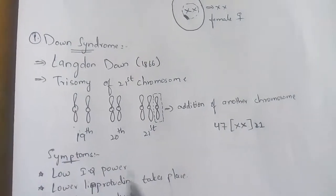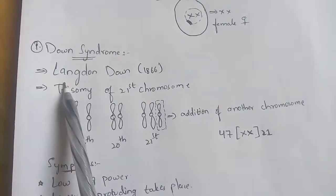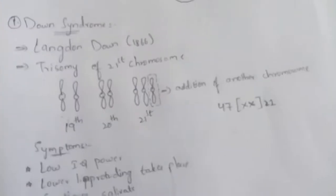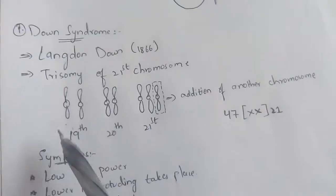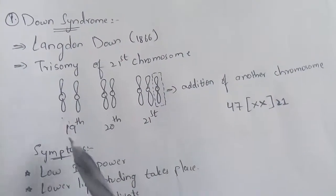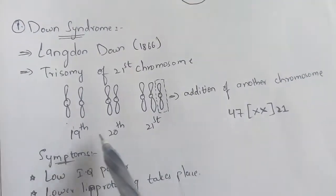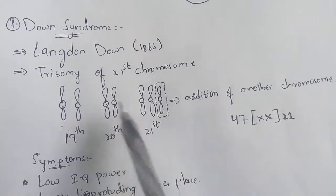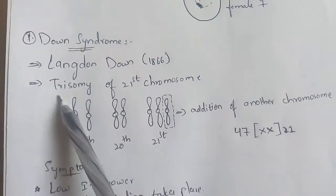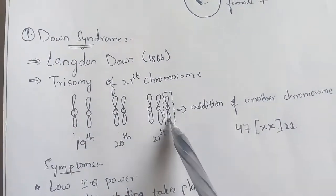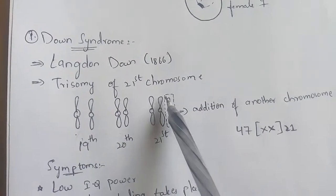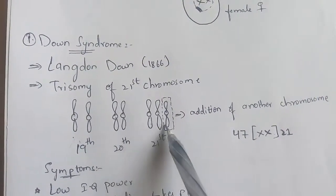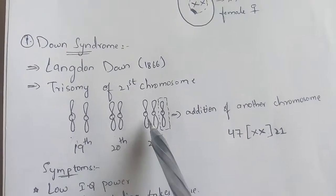Down syndrome was mainly pointed out by Langdon Down in 1866. The key thing to remember about Down syndrome is trisomy of the 21st chromosome. Consider this as a pair of 19th, 20th, and 21st chromosomes. Trisomy means three — another arm of chromosome will join to the 21st pair of chromosomes.